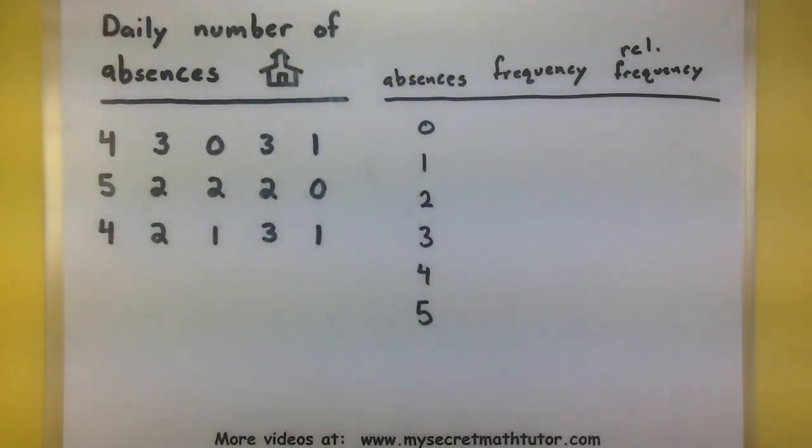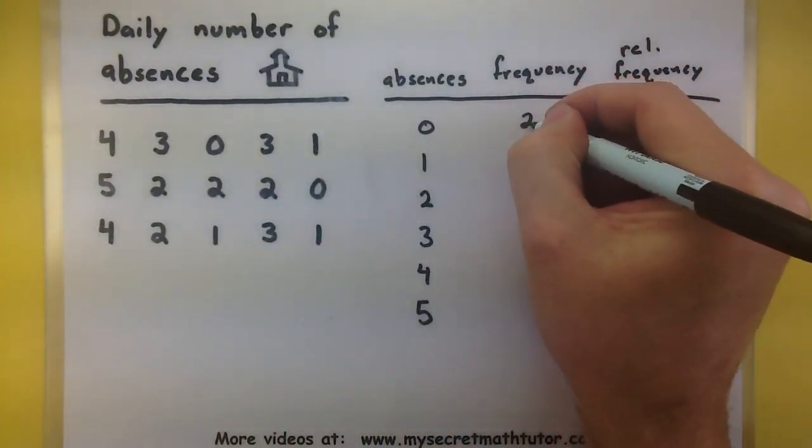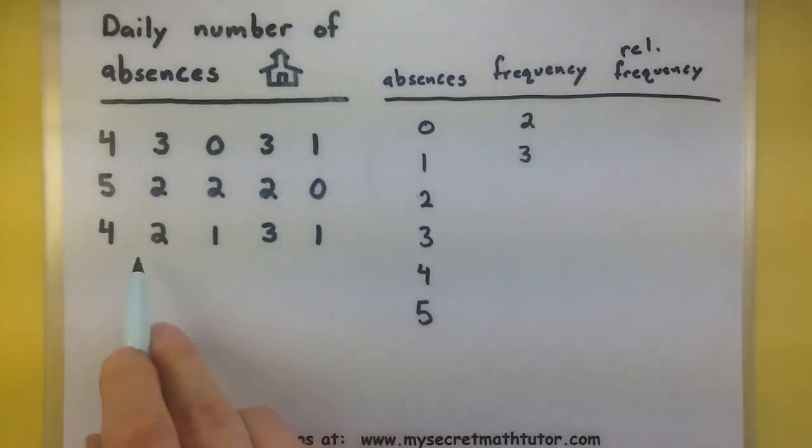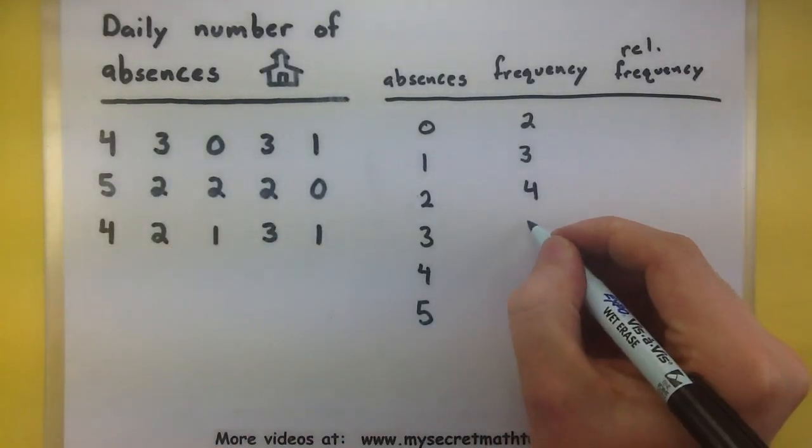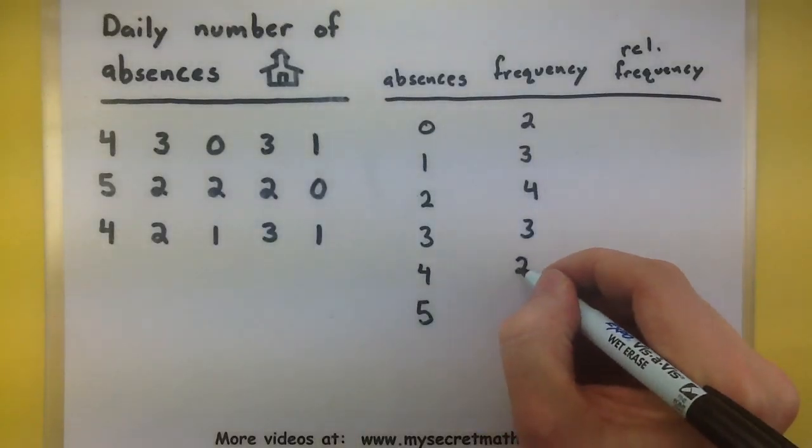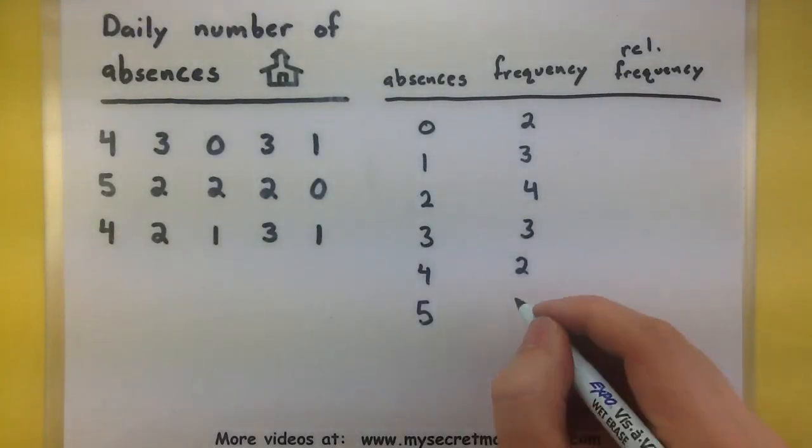And now I want to list how often each of these data values appear. So I see I have a couple of 0s, 2, 1, 2, 3 1s, 1, 2, 3, 4 2s, 1, 2, 3 3s, just 2 4s, and only 1 5.